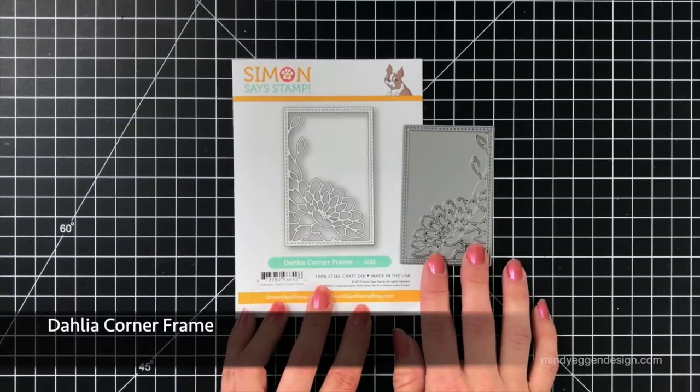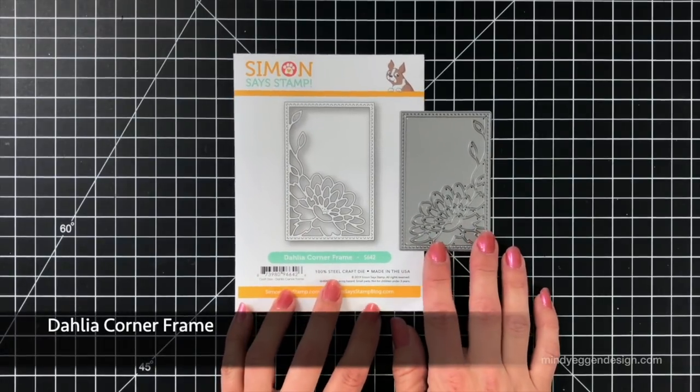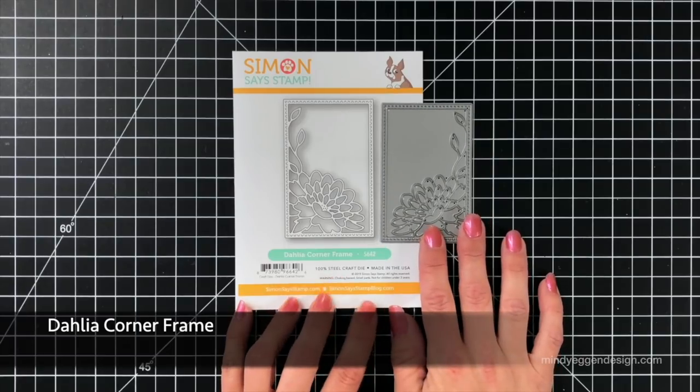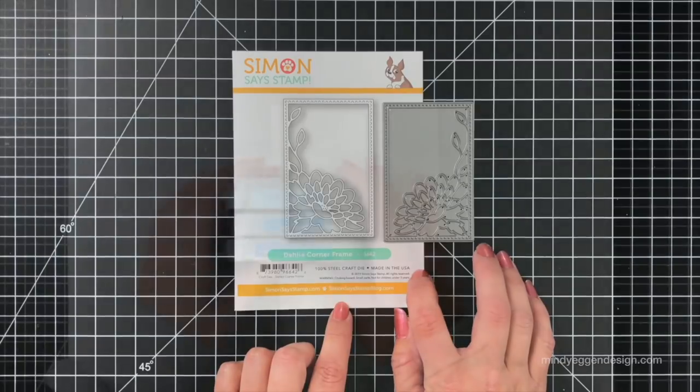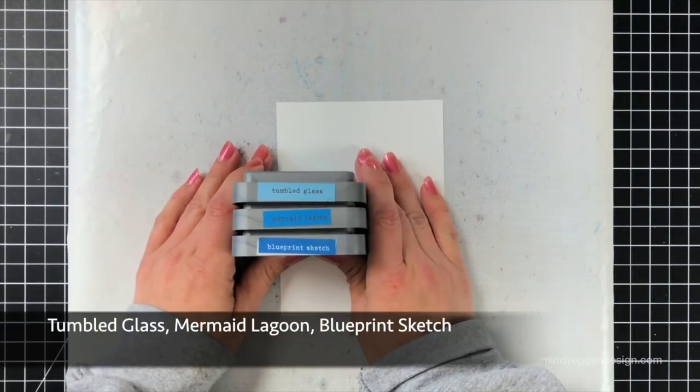Here's a look at the Dahlia Corner Frame Die. You can see it die cuts out this beautiful frame and a very gorgeous detailed Dahlia in the corner there. This measures about two and a quarter by three and a half inches.